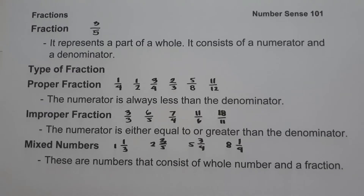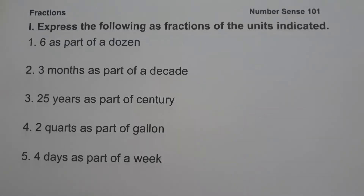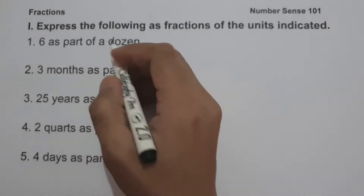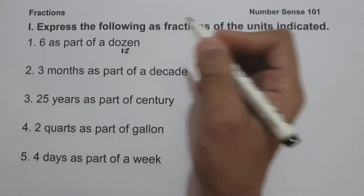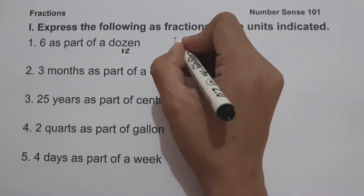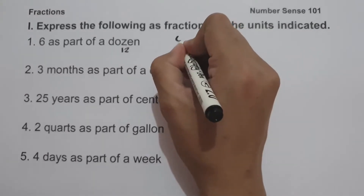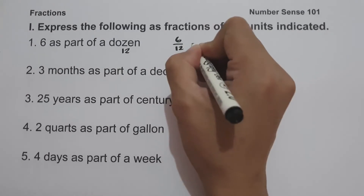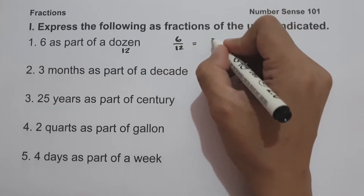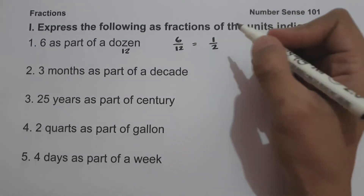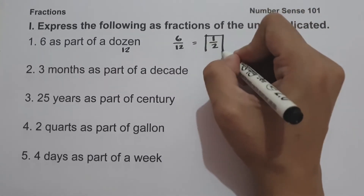Let's start and have some examples. On the first set of examples, we are going to express the following as fractions of the units indicated. On number 1, we have 6 as part of a dozen. A dozen means 12, so the fraction is 6 over 12. But 6 over 12 can be written as 1 half because they are divisible by 6, and this will be our answer.